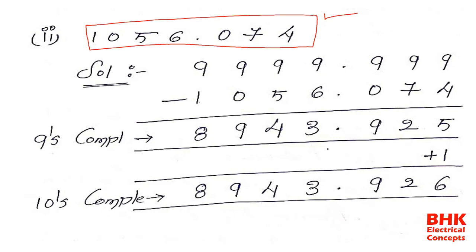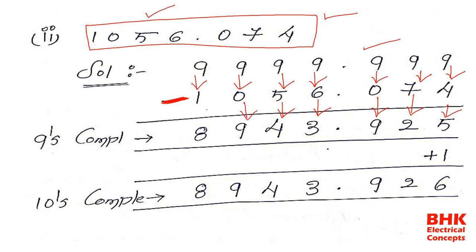Since the number is 1056.074, we consider the nines template as 9999.999 — the same format as the given decimal number. Subtracting each digit: from 9 subtract 4 gives 5, from 9 subtract 7 gives 2, from 9 subtract 0 gives 9, from 9 subtract 6 gives 3, from 9 subtract 5 gives 4, from 9 subtract 0 gives 9, from 9 subtract 1 gives 8. So the nines complement is 8943.925.